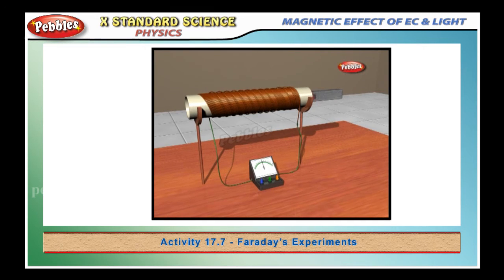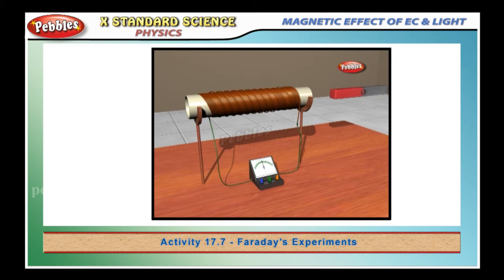Now, withdraw the north pole of the magnet away from the coil. The galvanometer deflects toward the left side, showing that current is now set up in the direction opposite to the first.